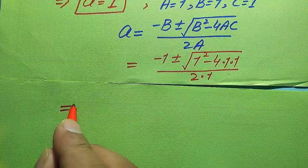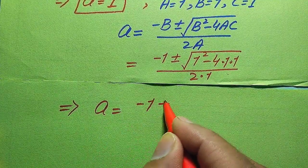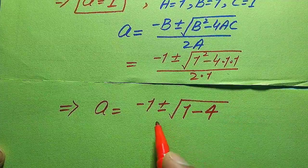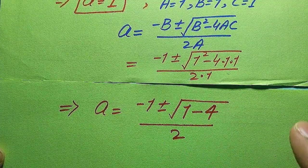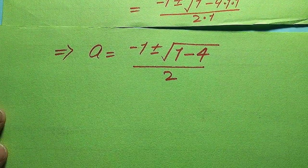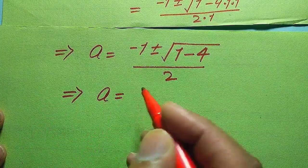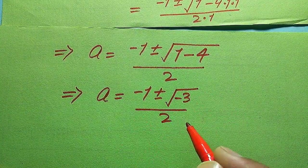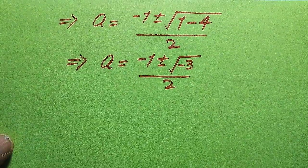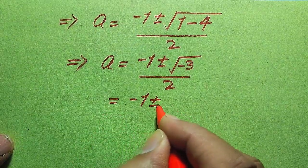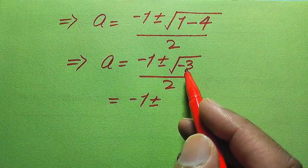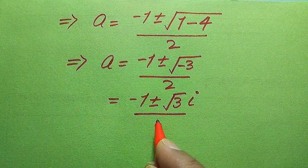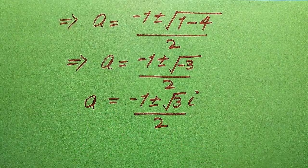Substituting the values, we get a equals minus 1 plus or minus square root of 1 squared minus 4 times 1 times 1, divided by 2 times 1. Simplifying: 1 squared is 1, minus 4 equals negative 3, divided by 2. So a equals minus 1 plus or minus square root of negative 3, divided by 2. Since we have a negative under the square root, it becomes iota, giving us a equals minus 1 plus or minus square root of 3 times iota, divided by 2.